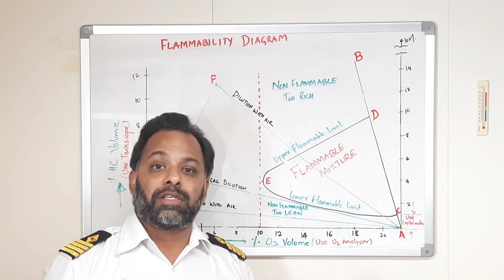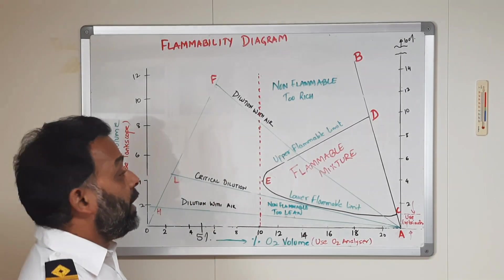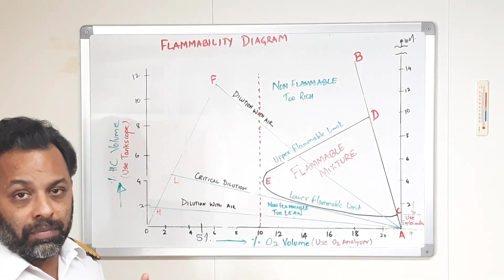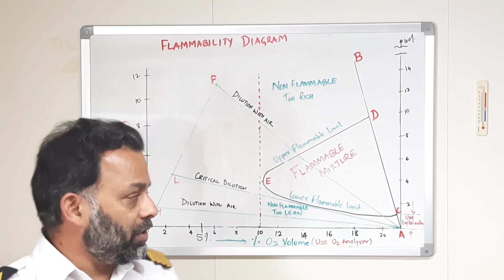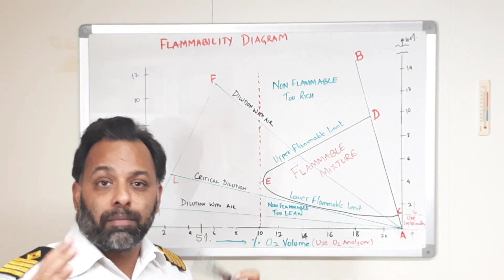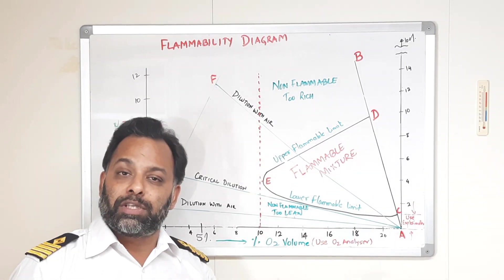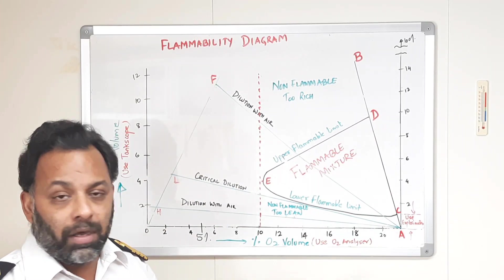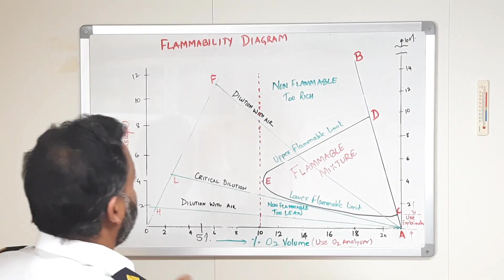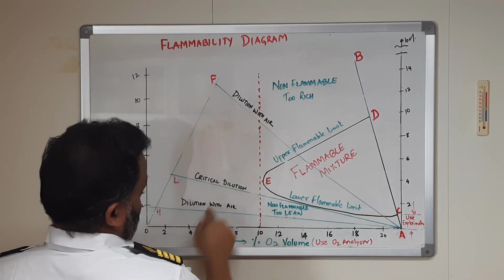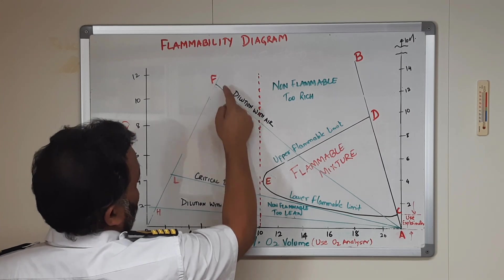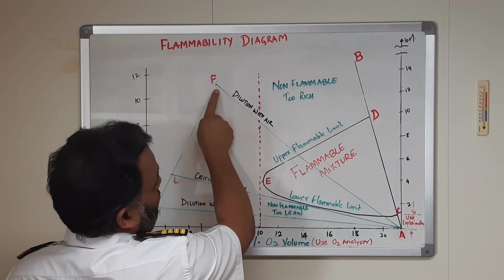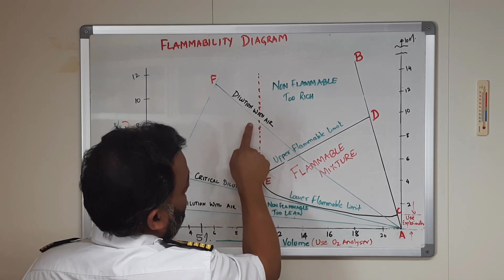Now, as we discharge our cargo at discharge port, we keep on pumping inert gas into the system. Suppose, let's suppose that we do not pump the inert gas into the system during the discharging. And of course, when we discharge, if we are not pumping inert gas, then air will get into the system. And if it is at some point, let's say F, and we introduce air into the system, the atmosphere of that tank will go like this.